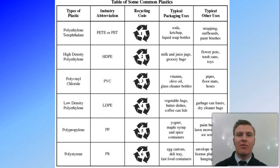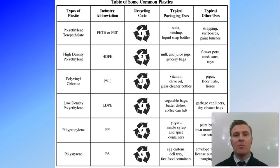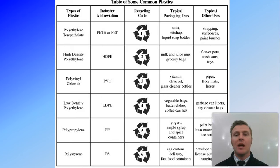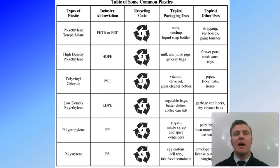Common recyclable plastics each have a recyclable number and need to be separated when recycling. These include: PET (polyethylene terephthalate) for coke bottles, high-density polyethylene for milk cartons, polyvinyl chloride for bottles and conduit, low-density polyethylene for shopping bags, polypropylene for buckets, and polystyrene used in packing.